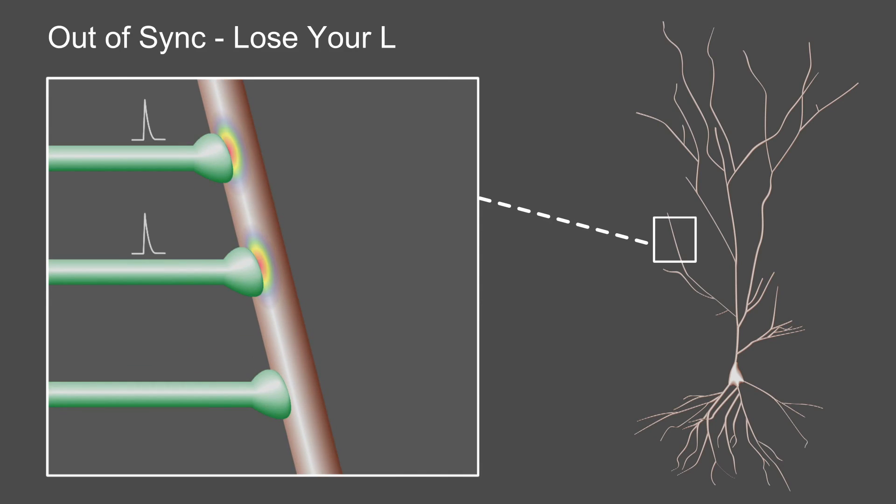Taking our findings together, we can now propose the following model for synaptic clustering by spontaneous activity. Here you see three neighboring synapses located on the dendrite of a cell. Two of these synapses are often co-active, and their transmission efficiency remains stable. However, the third synapse is out of sync with its neighbors, which leads to locally elevated levels of pro-BDNF.